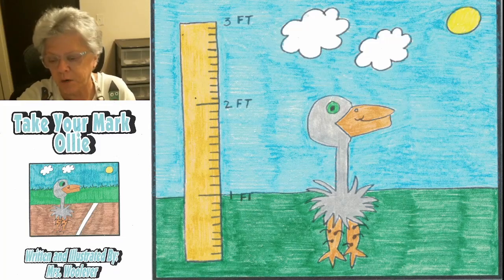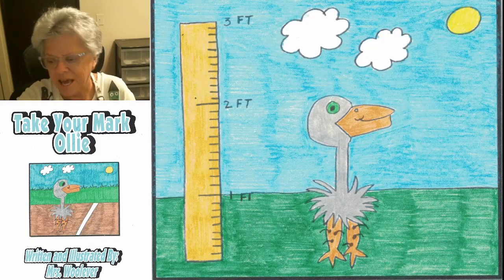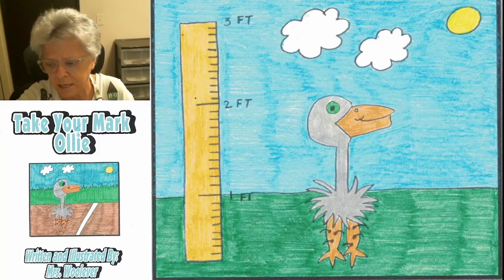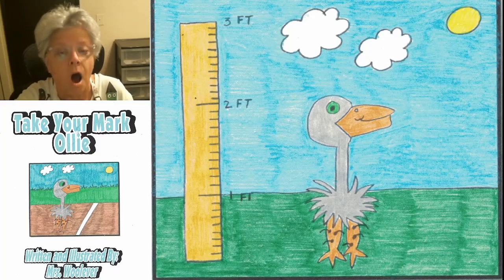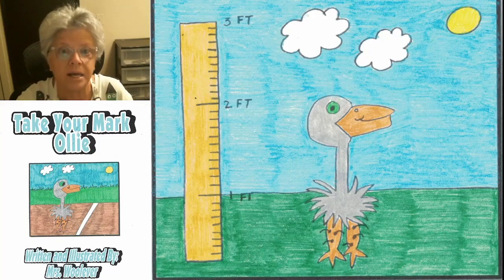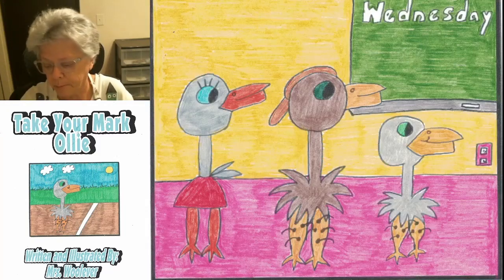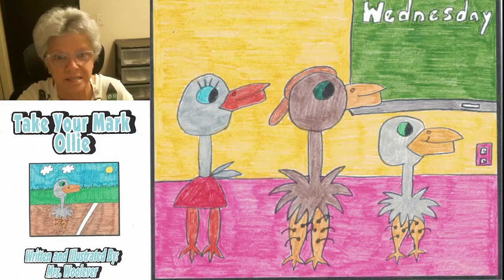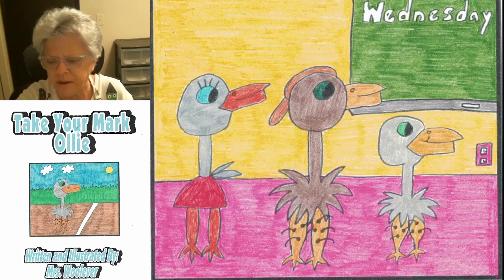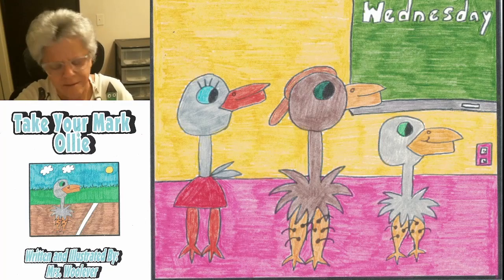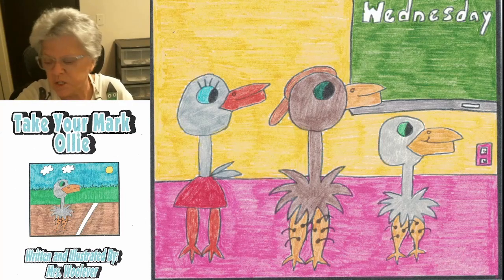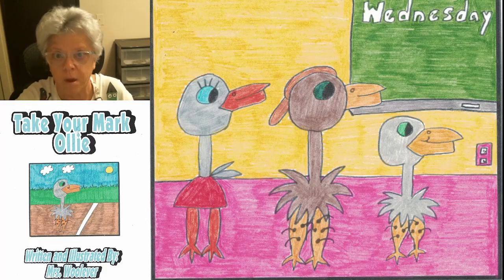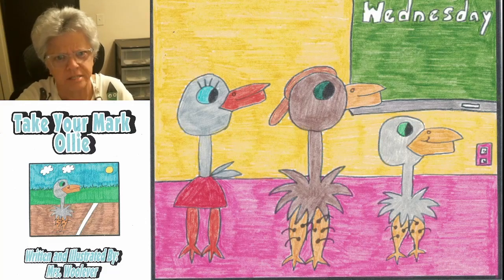Ollie is a cute gray ostrich. He has a very long neck, but he has very short legs. As a matter of fact, Ollie is the shortest one in class. Whenever his class lined up for recess or to go to an assembly, Ollie always had to line up in the front of the line. Everyone called him Shrimp, Shorty or Small Fry. Oh sure, he laughed with them, but it always hurt his feelings.